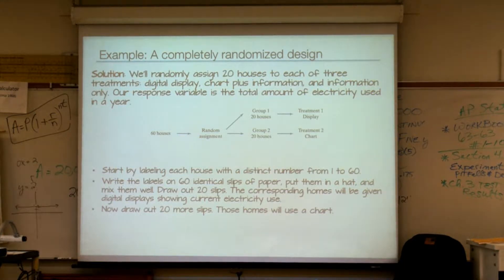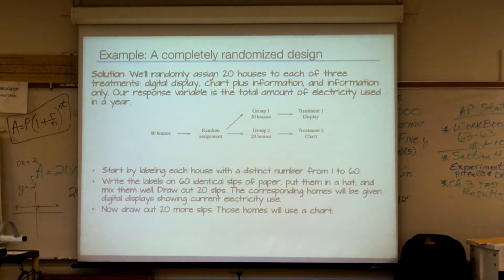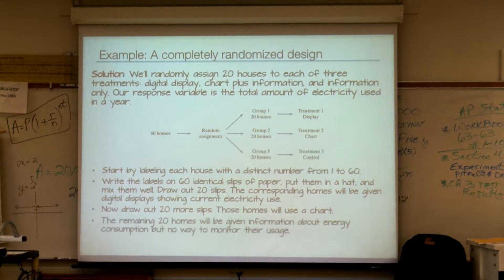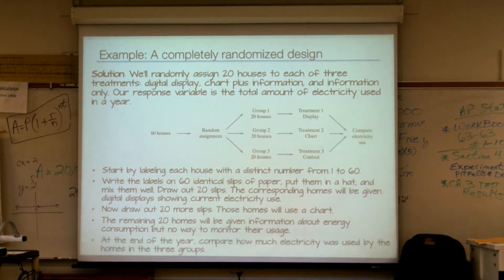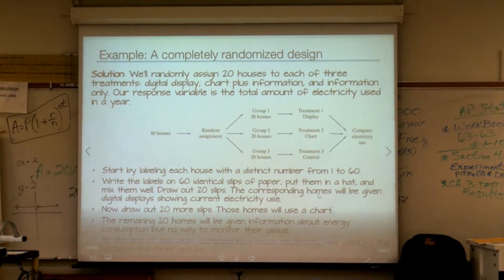For the second treatment group, we'll draw 20 additional slips — those homes will use a chart. And for the third treatment group, the remaining 20 homes will be given information about their energy consumption but they'll have no way to monitor their usage. Now, at the end of the year, we'll compare how much electricity was used by the homes in the three groups.